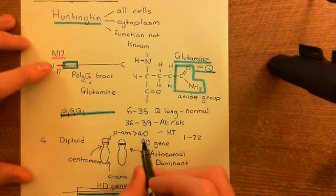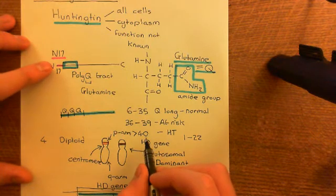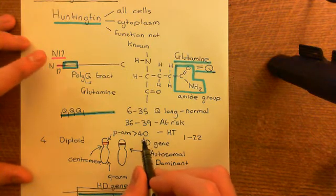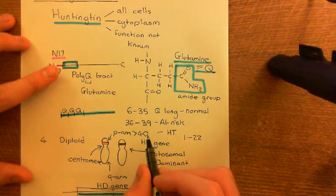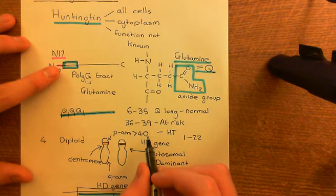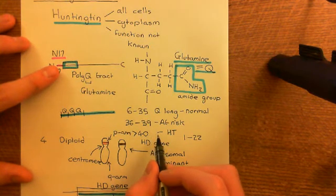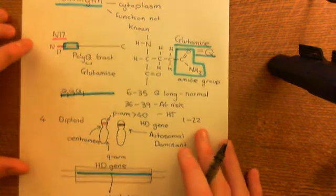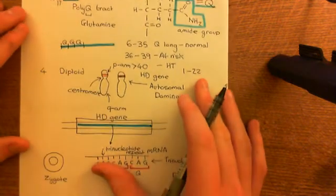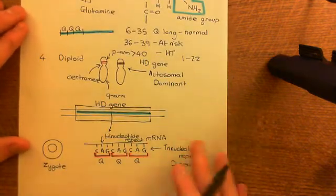If on the other hand you have within your cells a Huntingtin protein with greater than 40 repeats of glutamine in this polyglutamine tract, you are guaranteed to get Huntington's disease within your life, and it generally begins in the fourth or fifth decade of life.